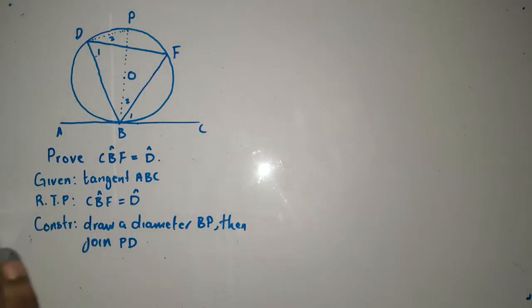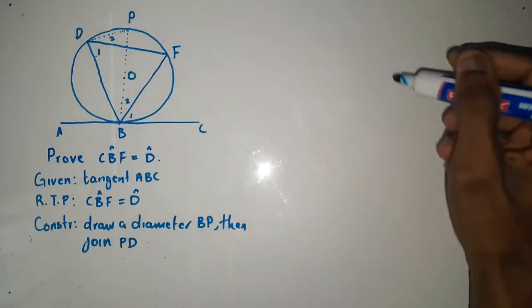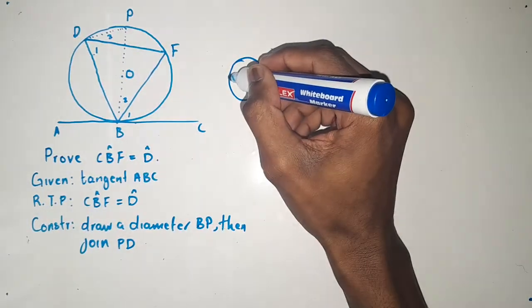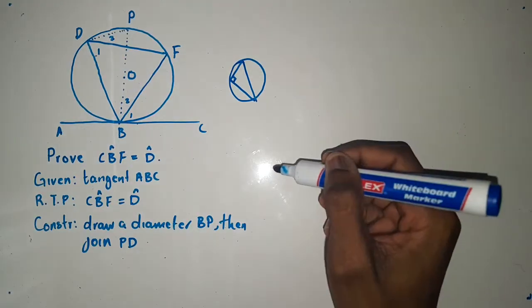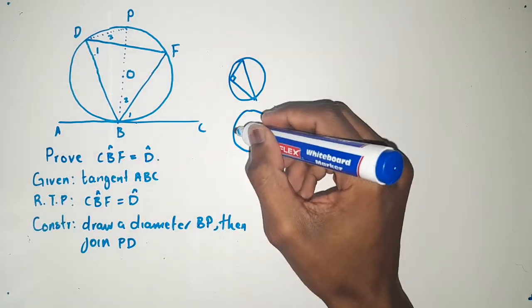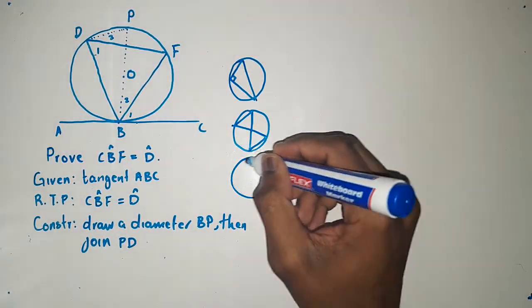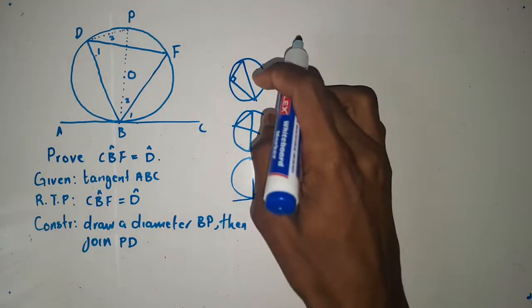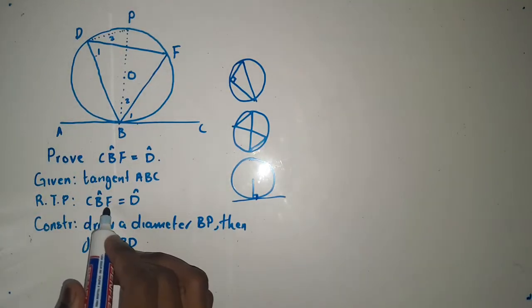On this given, we are going to use three theorems in order to prove the tangent-chord theorem. We have the first theorem, the second theorem, and lastly the third one. We will use these three theorems to prove that CBF equals D.